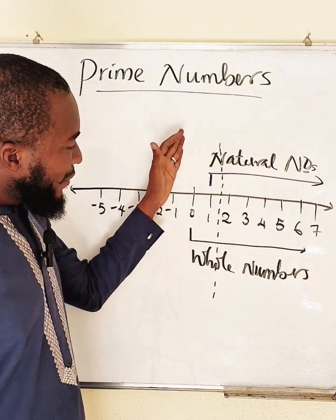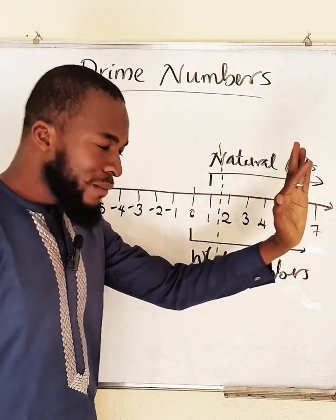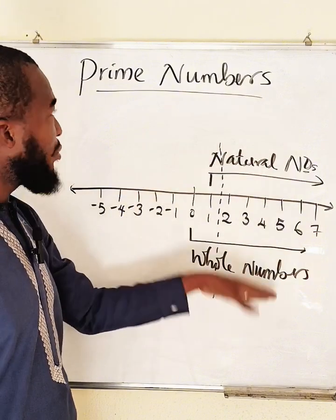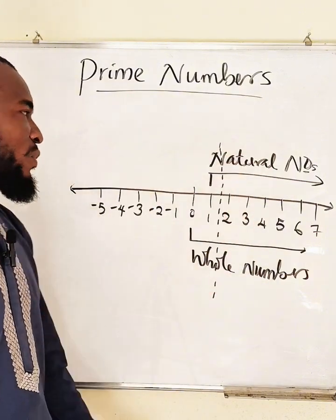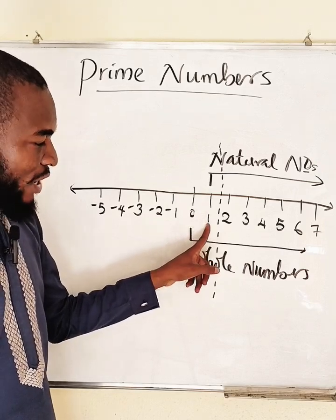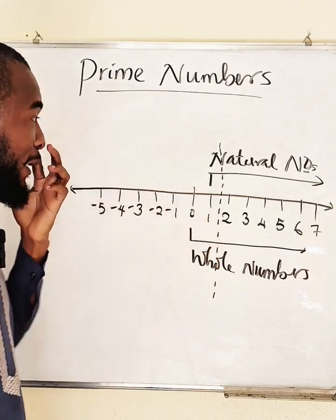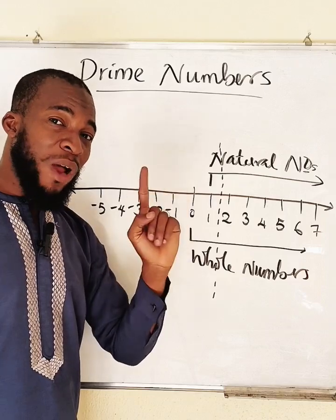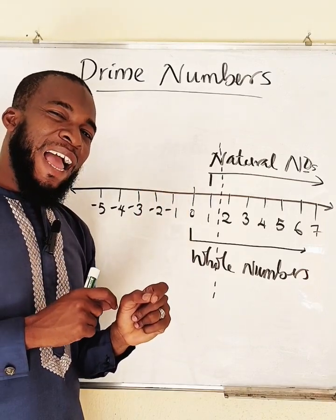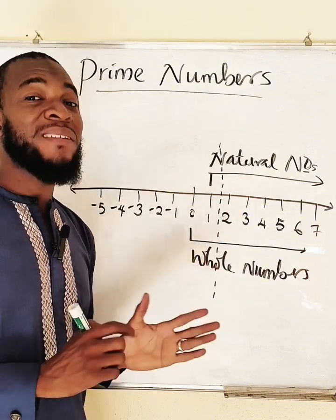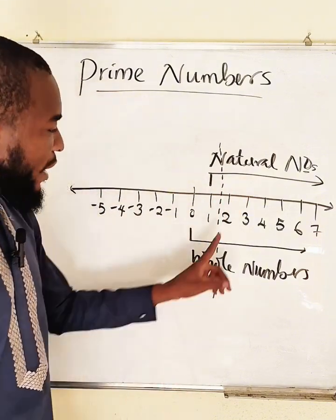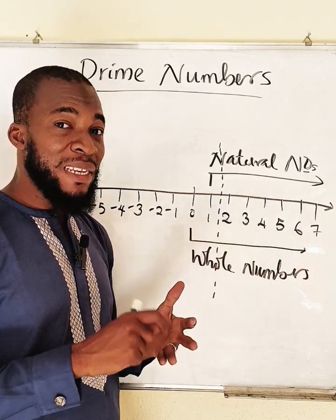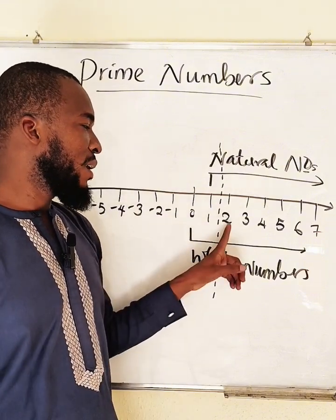If you look carefully, two, three, four, five, six, seven, and so on fall under natural numbers as well as whole numbers, which means you can use either natural numbers or whole numbers to define a prime number. So let's start: prime numbers are natural numbers greater than one that cannot exactly be divided by any natural number except one and itself. Any number you pick that can be divided by other numbers apart from one and itself is not a prime number. Let's test — let me take two.